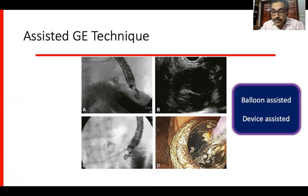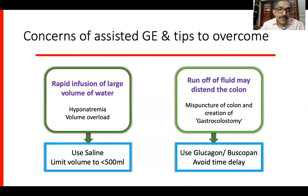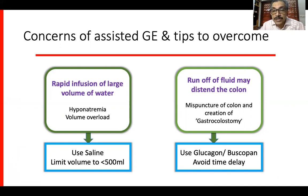The assisted GE technique can be either balloon-assisted or device-assisted. In balloon-assisted, a balloon is placed into the proximal jejunum over a guide wire and distended with contrast and methylene blue mixed with saline, then punctured. In device-assisted, a nasobiliary drain is placed over a guide wire into the proximal jejunum and fluid is instilled to distend the loop. Key concerns: rapid infusion of large volumes of water can cause hyponatremia and volume overload, so saline is advised and volume should be limited to less than 500 ml. Runoff of fluid can distend the colon and lead to mispuncture causing gastrocolostomy, so glucagon or buscopan should be used and the process must be quick.